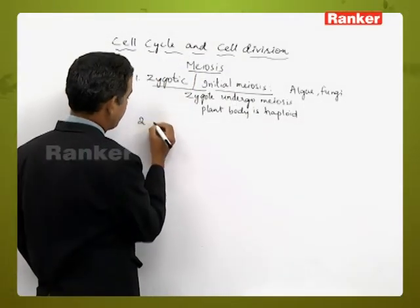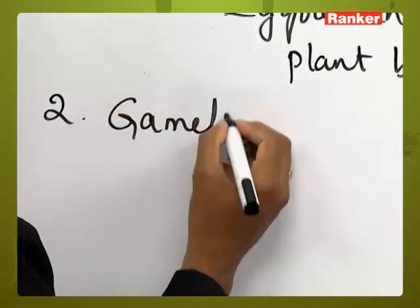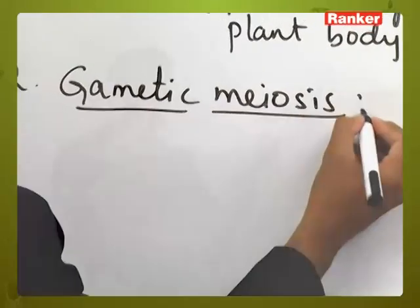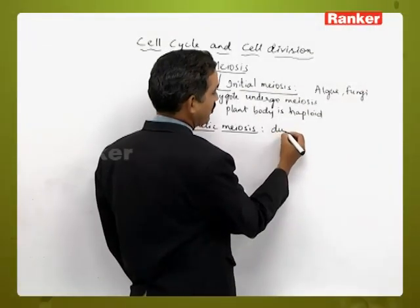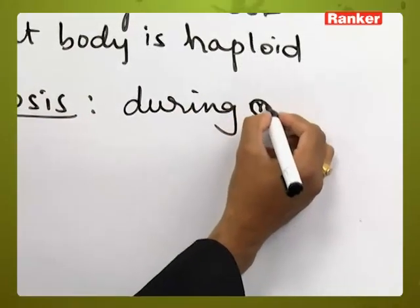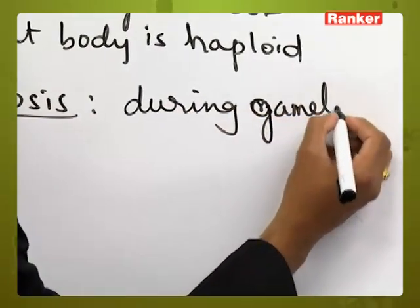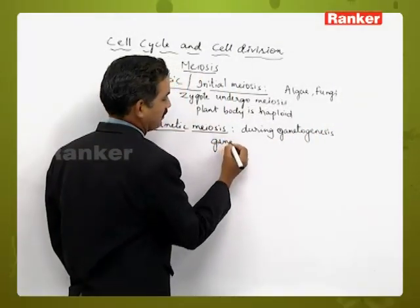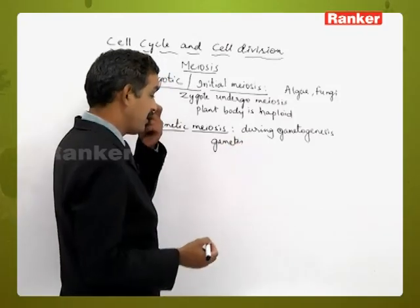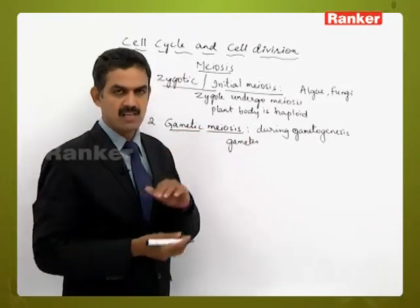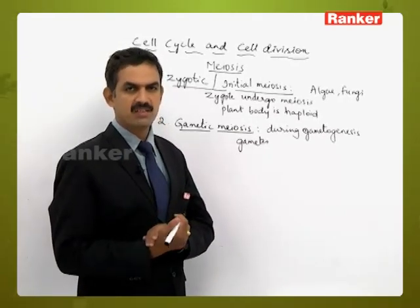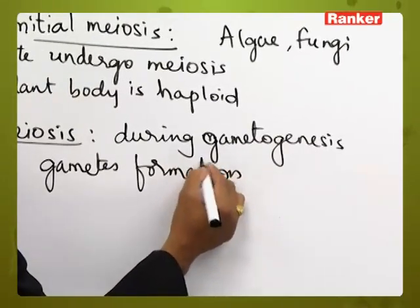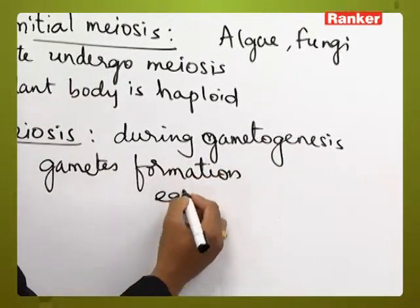The second type is gametic meiosis, where meiosis occurs during gametogenesis — that is, during gamete formation. The parental cells of the gametes divide by meiosis to form the gametes. This is mostly observed in animals.